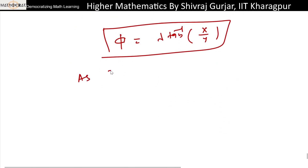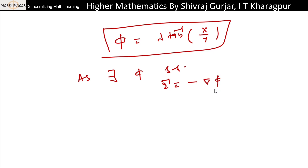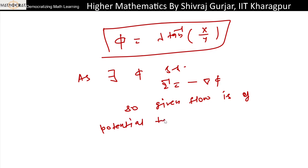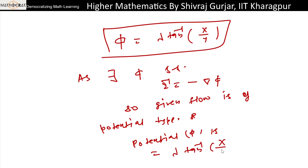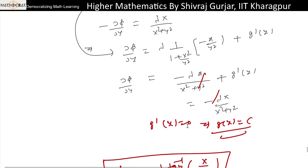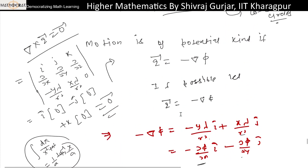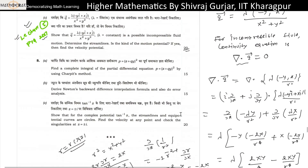There exists φ such that Q vector equals minus the gradient of φ. So the given flow is of potential type, and the velocity potential is φ = λ tan⁻¹(x/y). The expressions here were different from the PYQ version, but the concept was the same.